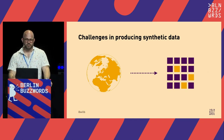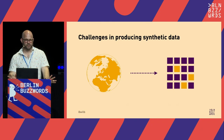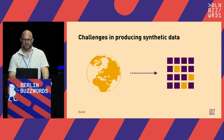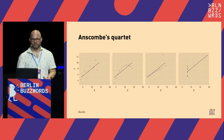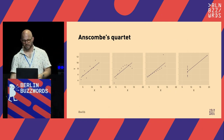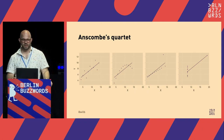An important pitfall: for any meaningful definition of resemblance, you can find many datasets that resemble one another in that way but not in other important ways. Probably the most famous example is Anscombe's Quartet — four synthetic datasets that have the same summary statistics and the same regression line, but they look very different.